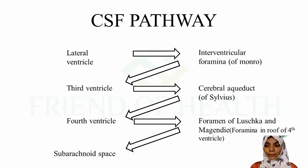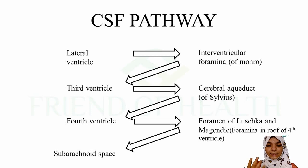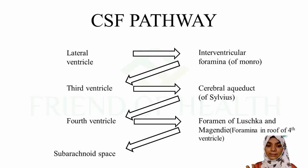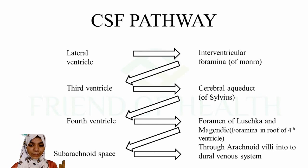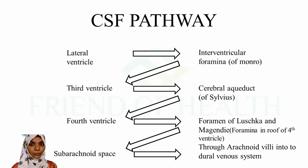From the fourth ventricle, CSF passes through the foramen of Luschka - the lateral foramen - and the foramen of Magendie - the medial foramen - into the subarachnoid space. From the subarachnoid space, CSF is absorbed through the arachnoid villi into the dural venous sinus. This is the CSF pathway.